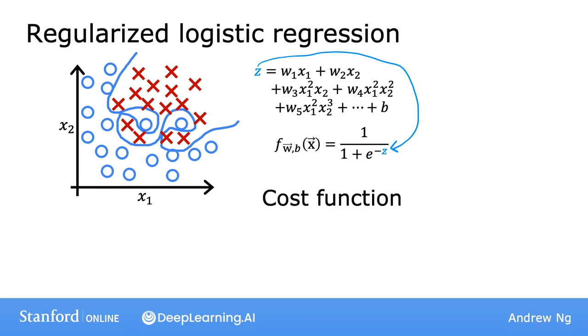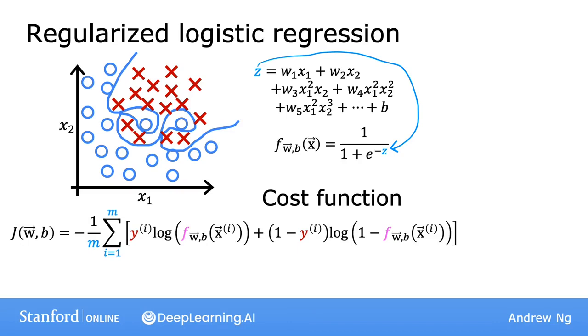This was the cost function for logistic regression. If you want to modify it to use regularization, all you need to do is add to it the following term. Let's add lambda, the regularization parameter, over 2m, times the sum from j equals 1 through n, where n is the number of features as usual, of wj squared.